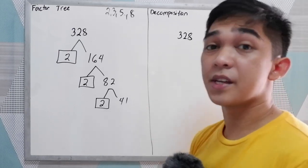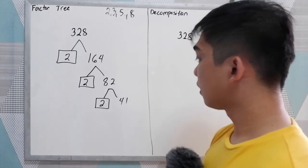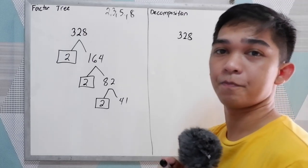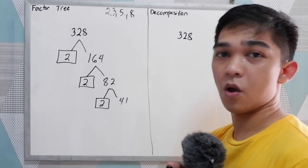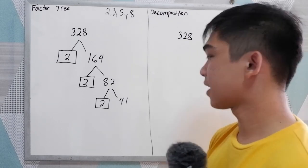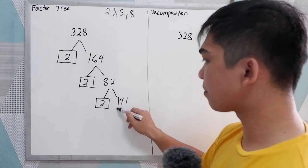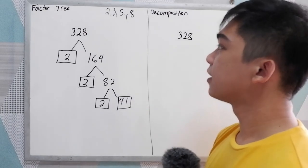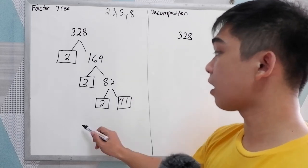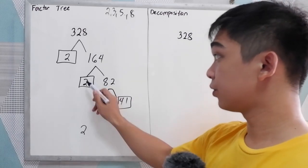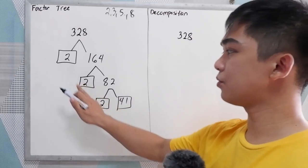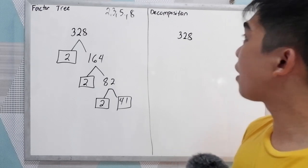82 is not a prime number. The factors of 82 are 2 and 41. Now, 41 is a prime number — check your notes to confirm. So box 41. The prime factors of 328 are 2, 2, 2, and 41.